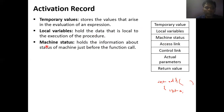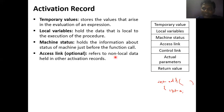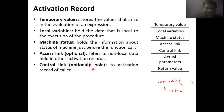Machine status holds information about the status of the machine just before the function call. Whenever main calls add, the machine status of main is stored somewhere, because when we complete the task of add we want to return back to the calling function — so we keep track of where to return. Access link stores information about non-local data — data not present in the current function but present in another function that we are going to use. Control link points to the actual activation record of the caller — main presents the activation record for the add function.